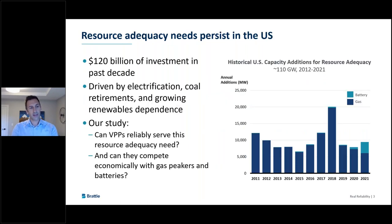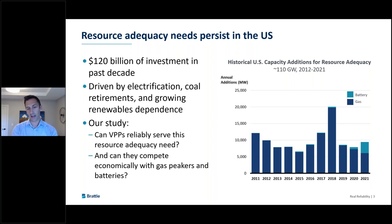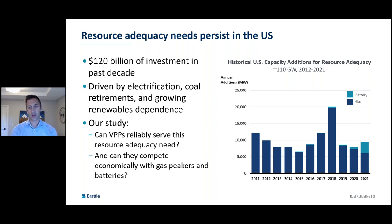Why did we do this study? When we looked at the data, we saw that $120 billion has been invested in generation capacity built primarily for resource adequacy purposes over the last decade. The chart shows an annual snapshot — about 110 gigawatts were added between 2012 and 2021. Most of that has been gas capacity, but increasingly over the last couple of years, utility-scale batteries have also started to be developed to meet resource adequacy needs.